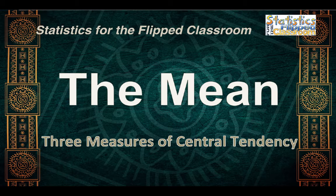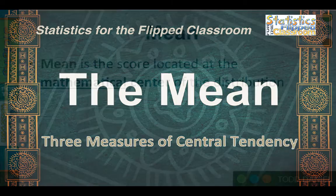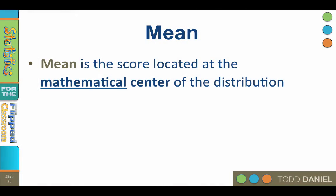There are three measures of central tendency: the mean, the median, and the mode. Now we get to talk about the most commonly used measure, the mean. The mean is the score located at the mathematical center of the distribution.